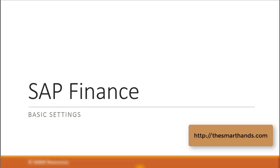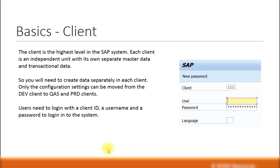In this presentation, we look at the basic settings for SAP Finance. In SAP Financial Accounting, the client is the highest node in the system. The client is usually defined by a three-digit code, and you can find the client when you first log in to SAP — it will be there on the main screen. For example, the client on this screenshot is 100. The client is like an independent unit, and it is the highest node for any module.